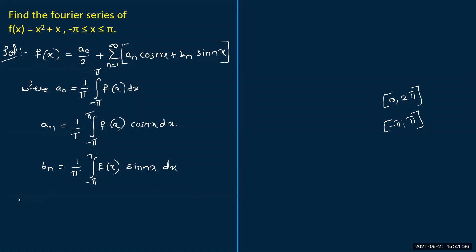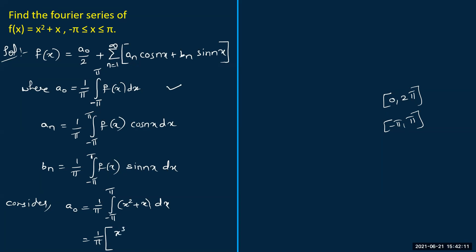Let us calculate each one. First, a₀: a₀ = (1/π) ∫₋π^π (x² + x) dx. I am using this formula to calculate a₀, integrating f(x) dx. When you integrate x², we get x³/3, and when we integrate x, we get x²/2, with limits from -π to π.